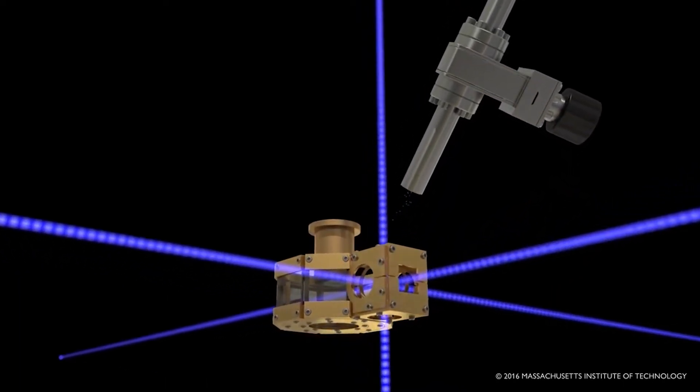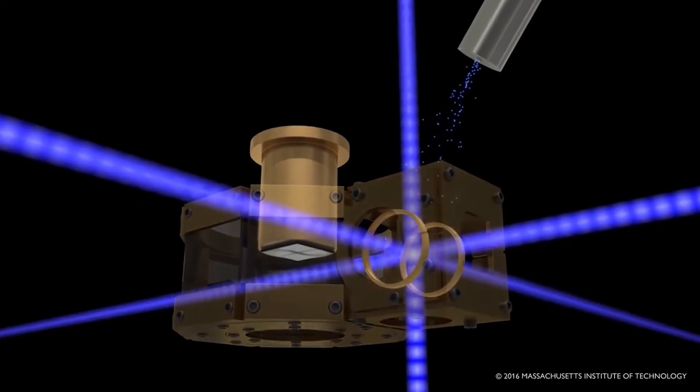In an ultra-high vacuum system, a hot atomic vapor is created by heating metal in an oven.